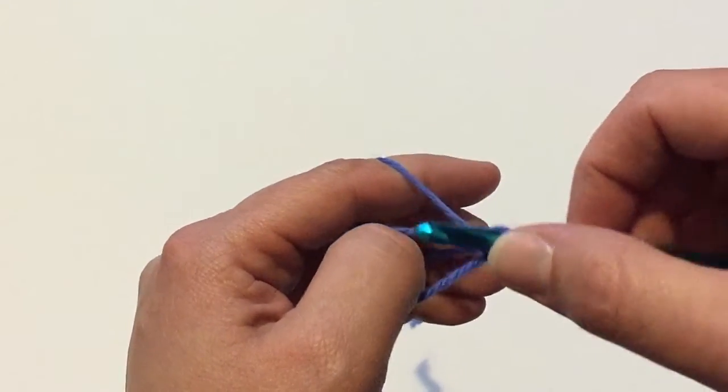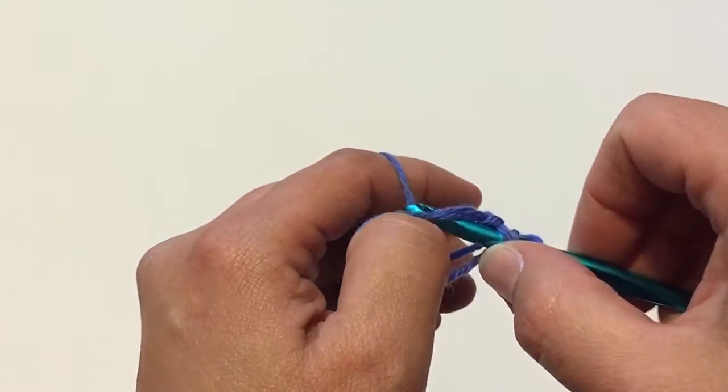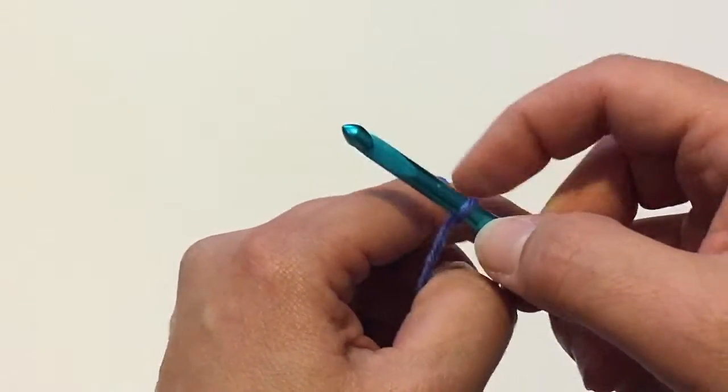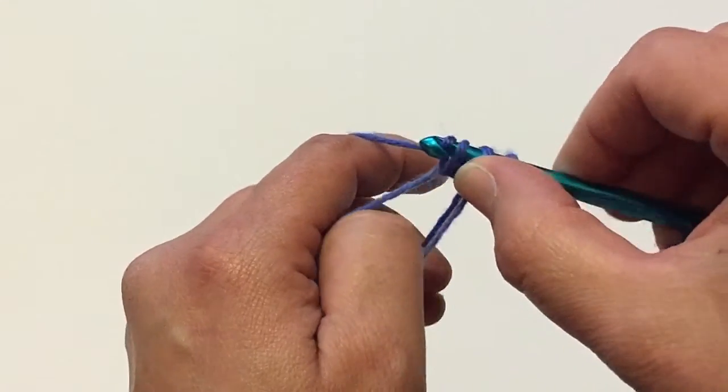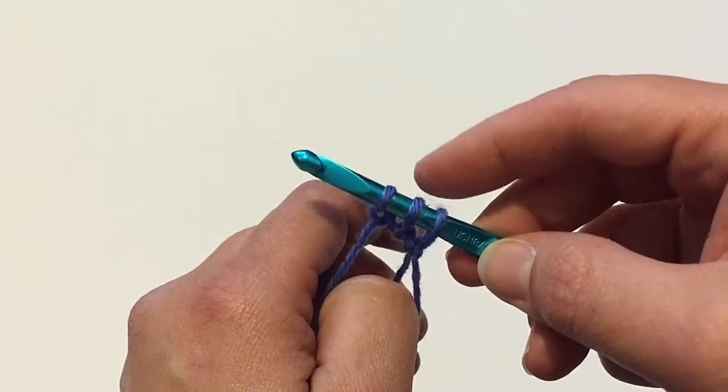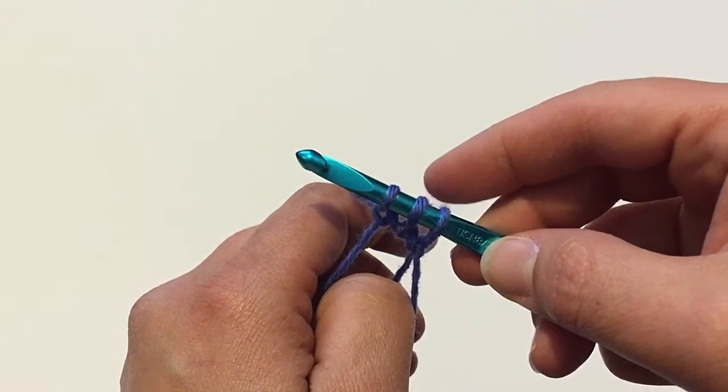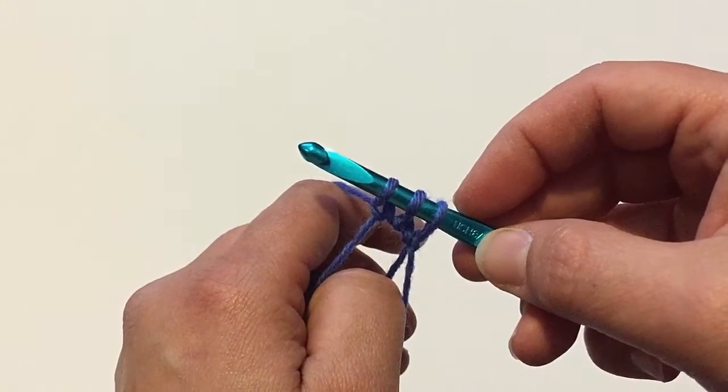So you're going to continue working in that manner. Take your hook through the loop, grab the yarn, pull it through, wrap the yarn around the crochet hook, and then pull it through that loop. And now you have three stitches. Keep working until you have the number of stitches cast on as called for in your pattern.